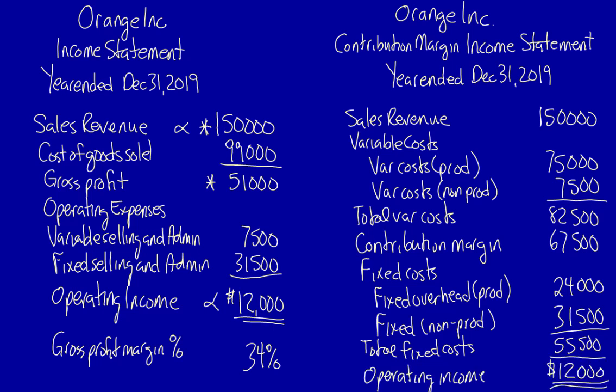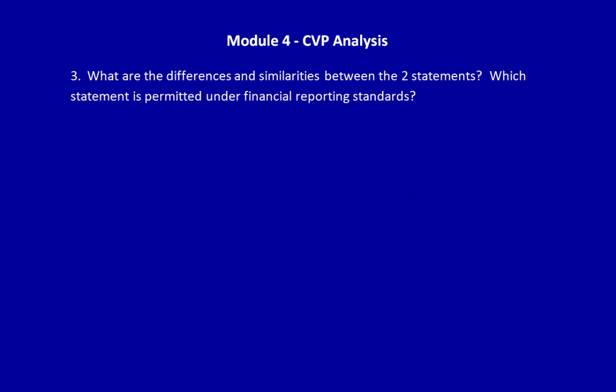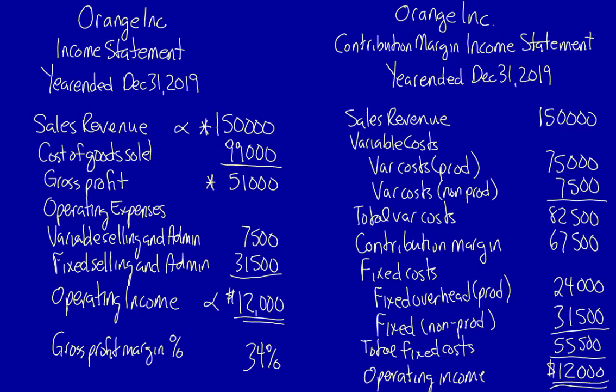We have just created both the traditional income statement and the contribution margin income statement. Let's move on to the next part of the question: what are the differences and similarities between the two statements? Which statement is permitted under financial reporting standards, or GAAP — generally accepted accounting principles? Both statements show a company's revenues, expenses, and operating income for a period of time. Note that the top-line revenues and the bottom-line operating income are identical. The difference is in how costs are categorized or grouped together.